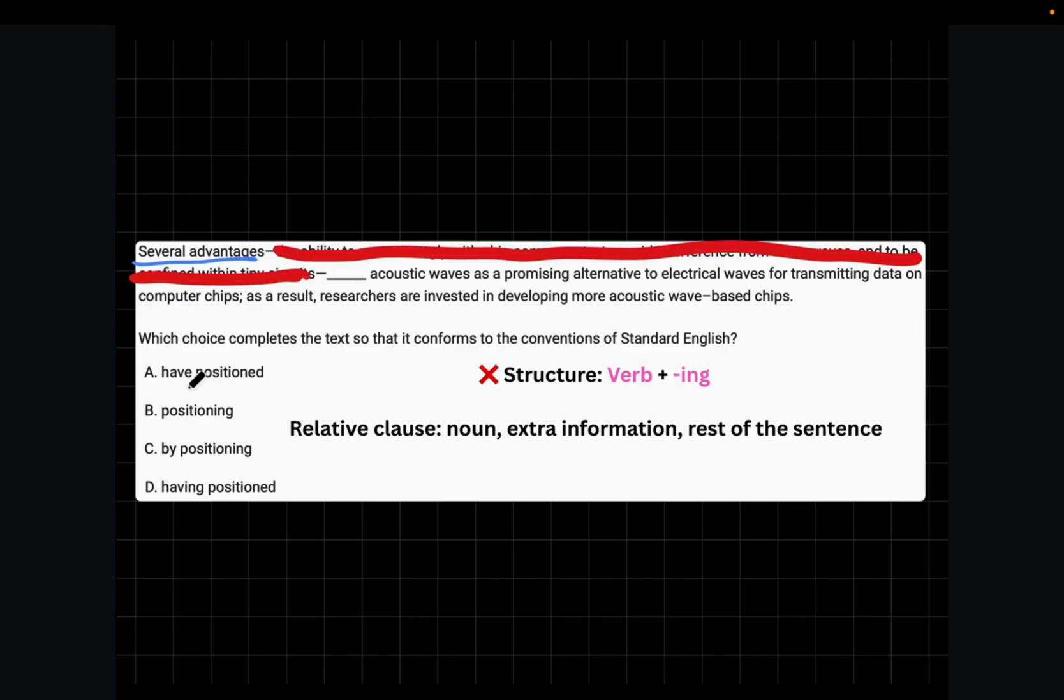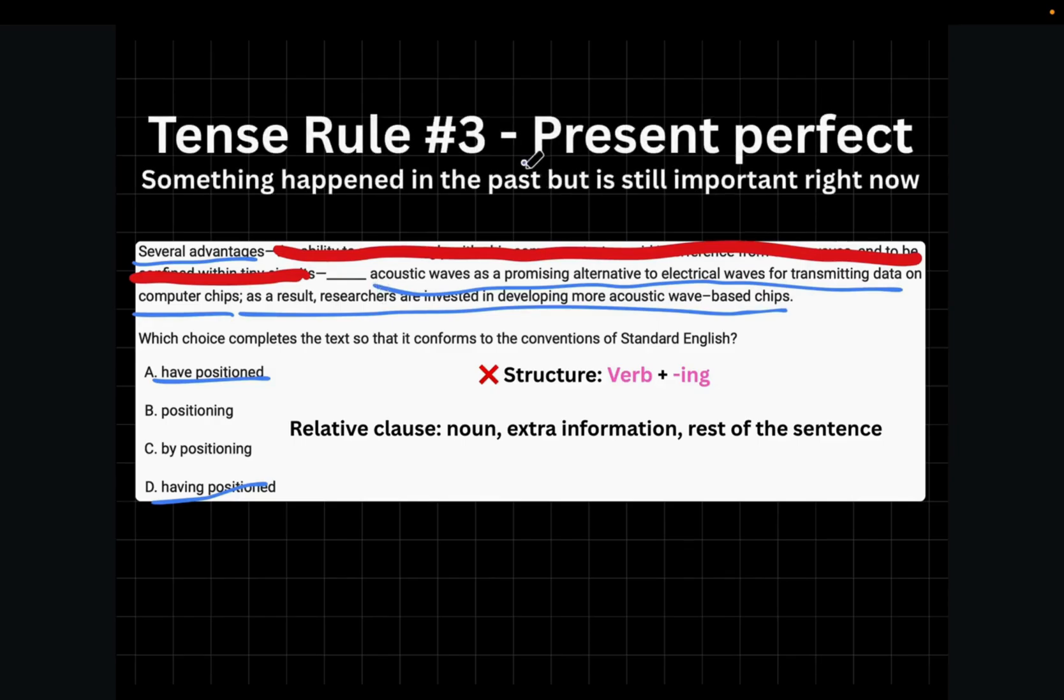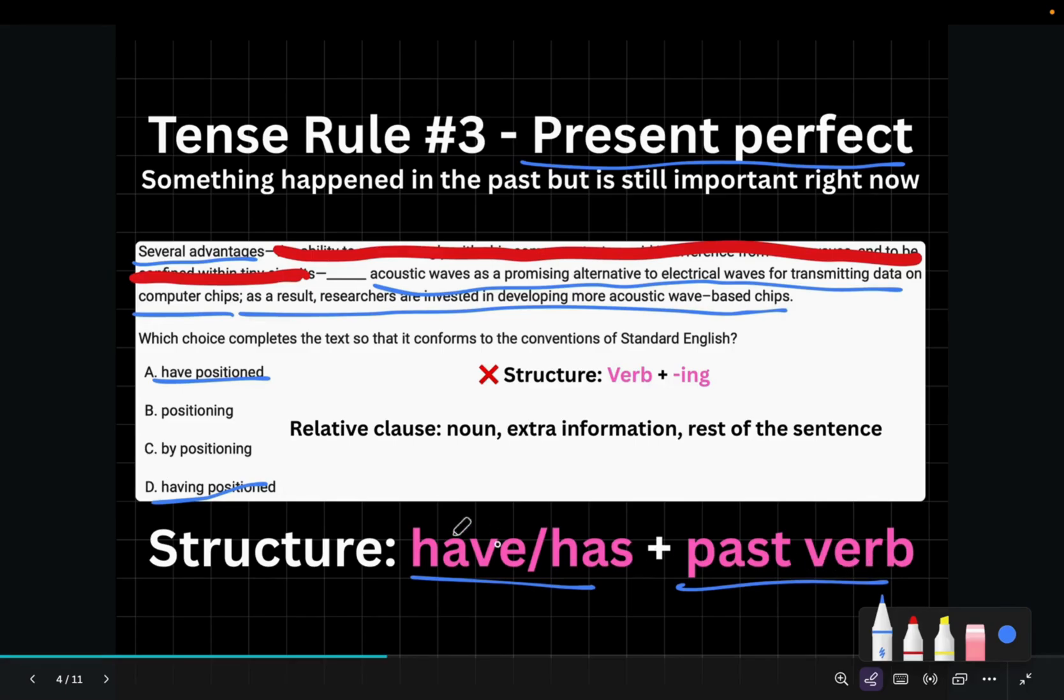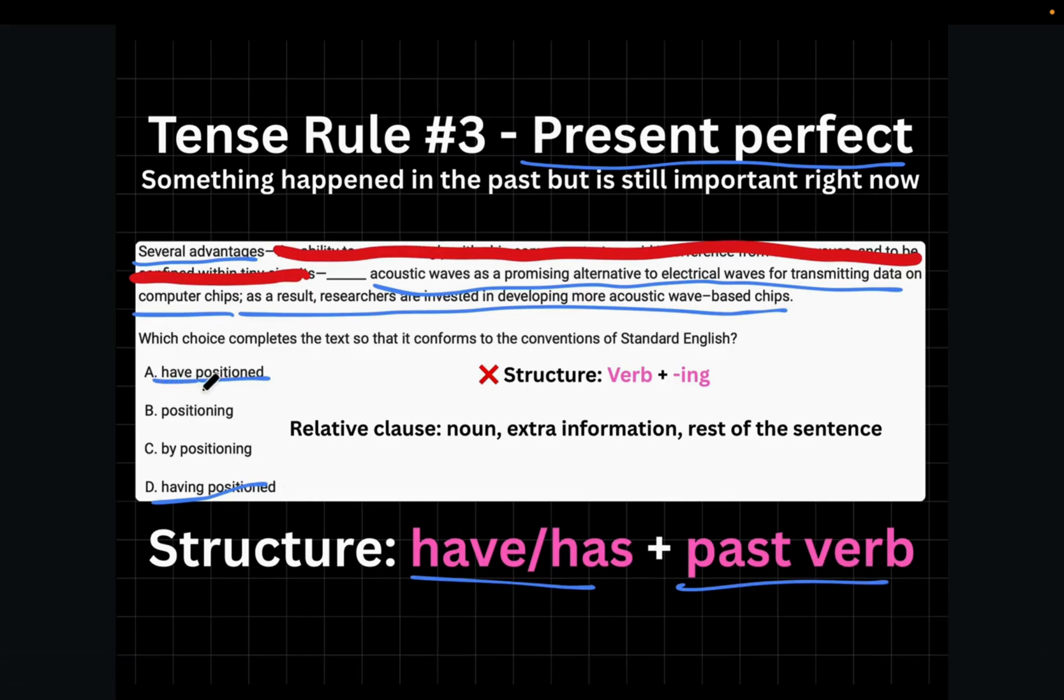So it says several advantages have positioned or having positioned acoustic waves as a promising alternative to electric waves for transmitting data on computer chips. So this has happened in the past. As a result, researchers are invested in developing more acoustic wave-based chips. So they're now invested in developing more of these chips. Meaning that this happened in the past, but is still important or still has effect on the now. So we will use tense rule number three, which is present perfect. Present perfect is used when something happened in the past, but is still important right now. And its structure is basically have or has plus the past verb. In this case, that would mean choice A is correct.